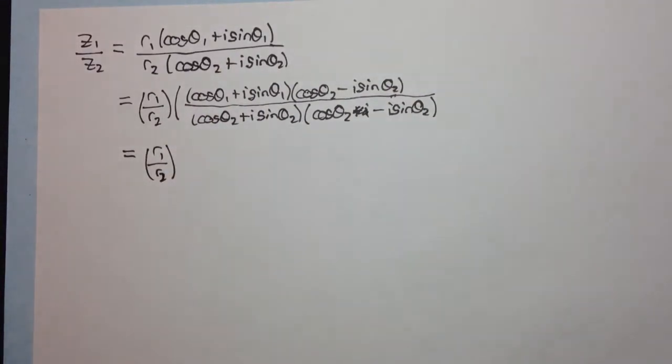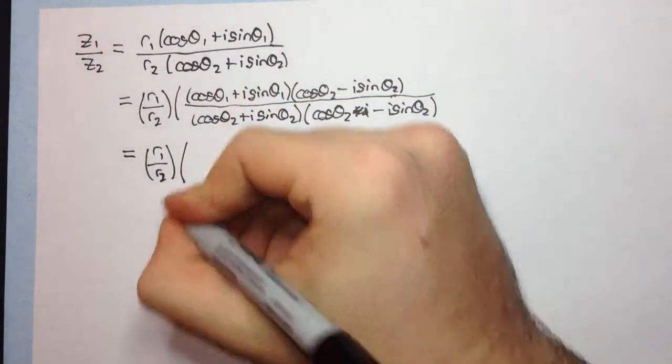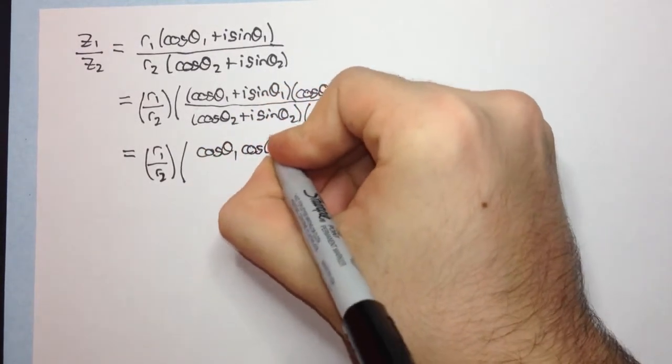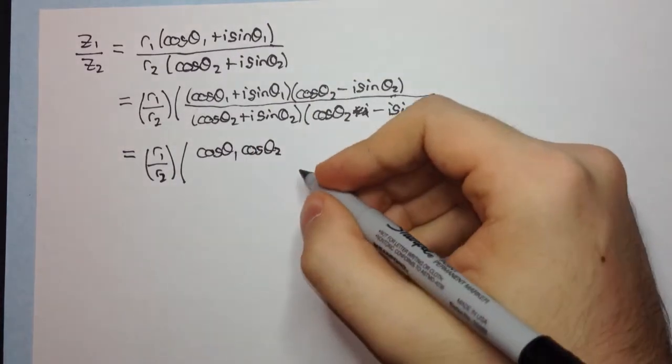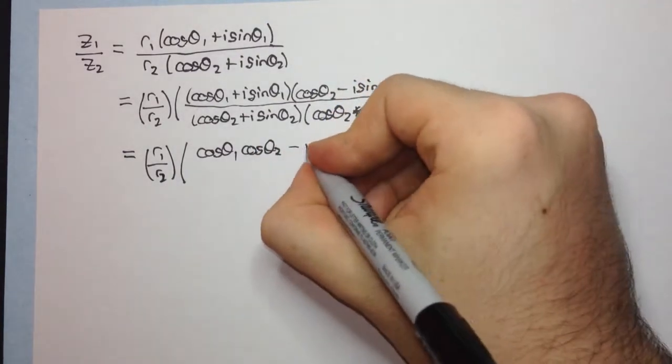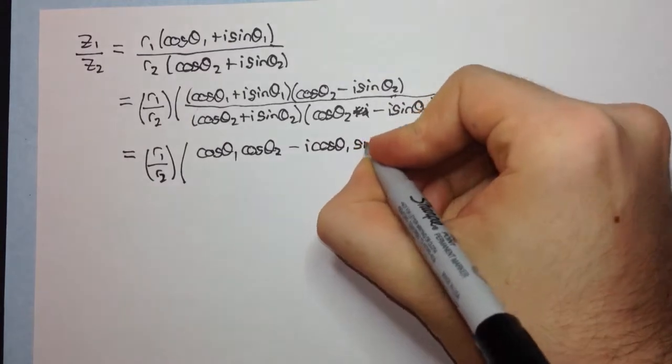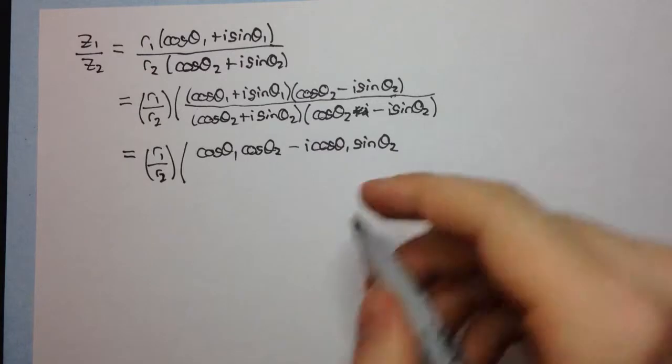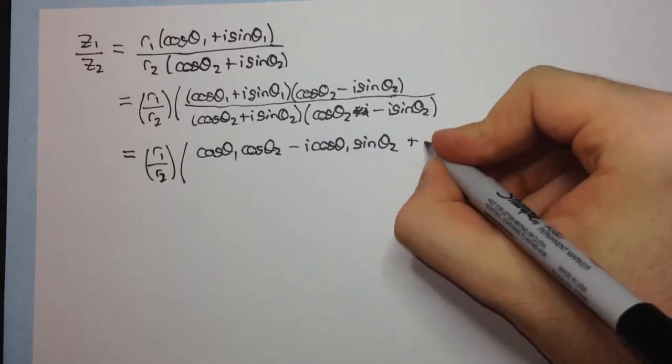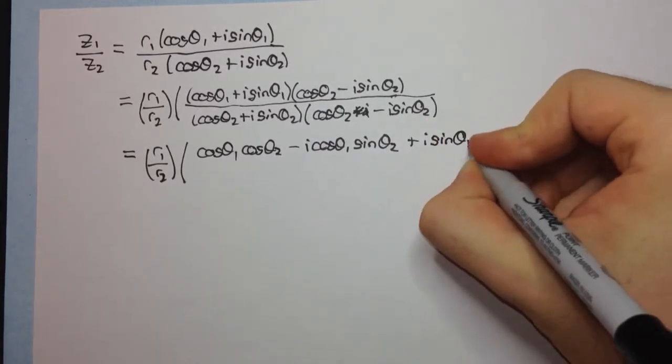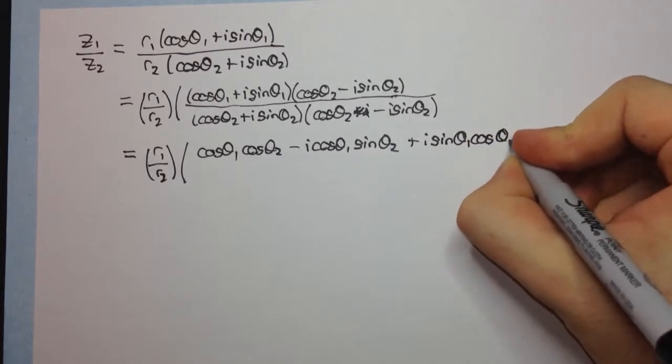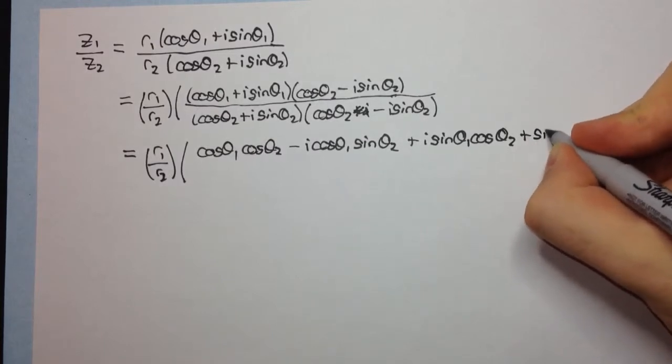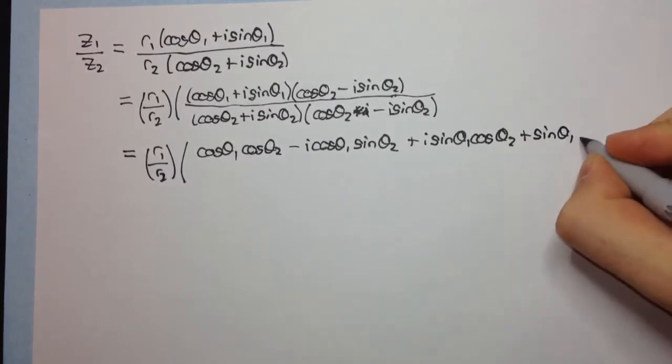We're going to get cos theta1 cos theta2 plus i sin theta1 cos theta2. And then we're going to get minus i squared, which is a plus sin theta1 sin theta2.